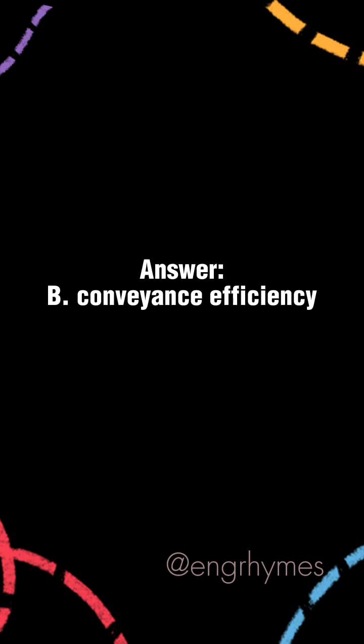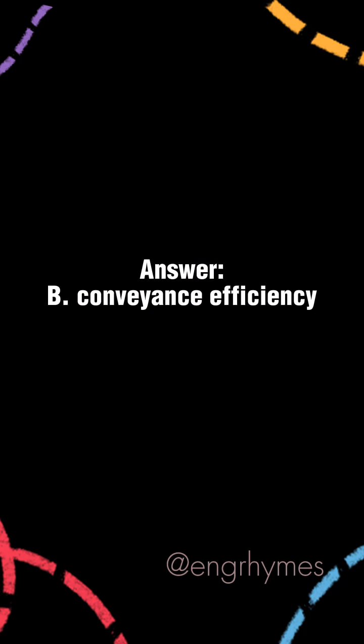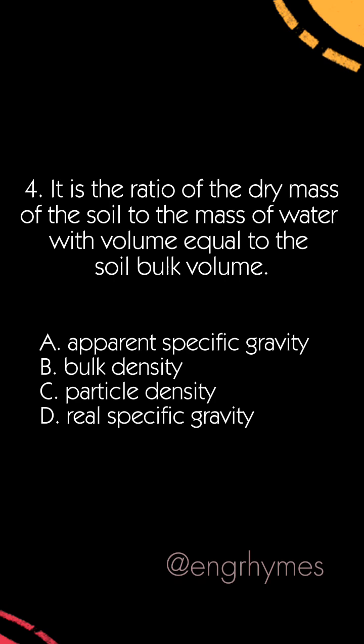Answer: B. Conveyance efficiency. Next question: It is the ratio of the dry mass of the soil to the mass of water with volume equal to the soil bulk volume.